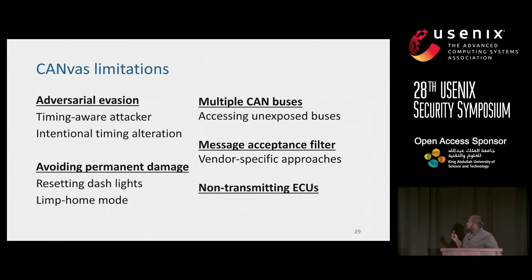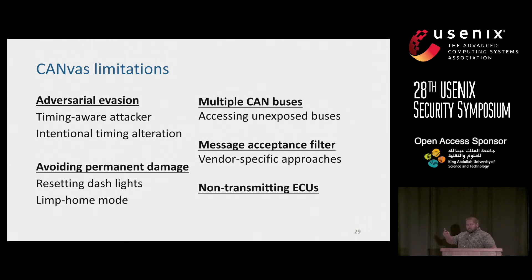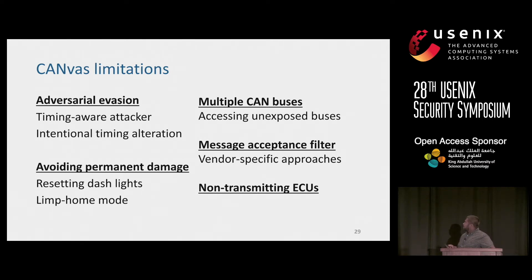In the paper, we talk about how we avoid permanent damage and how we reset dash lights. Even as you're shutting off ECUs, they are built to handle that — in case a rat bites through the wires or there's an electrical flaw. Because this is not a permanent fault, for most cases when you simply turn off the car and turn it back on, the dash lights disappear. This mode is called limp home mode. For modern cars starting to have multiple CAN buses, we also talk about how to gain access to unexposed buses with minimal disassembly by going through the doors.